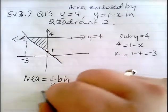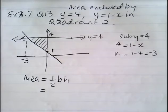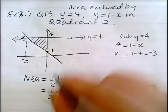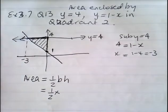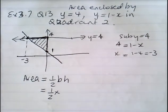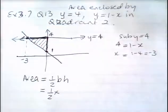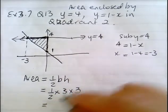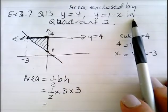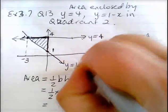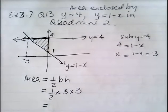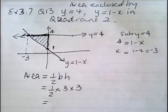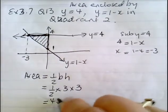Using the area of a triangle formula: area equals half times base times height. The base distance is 3 and the height is 3, so half of 3 times 3 gives 4.5 units squared.